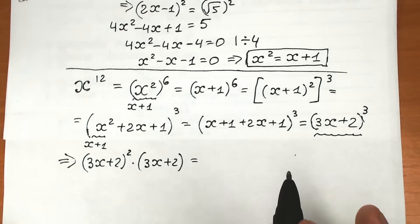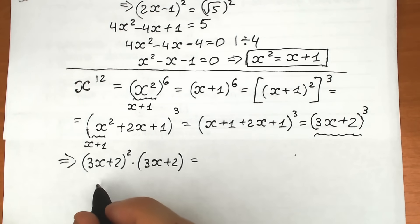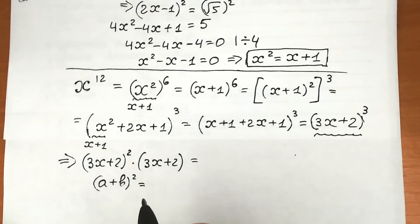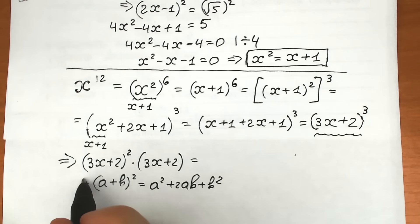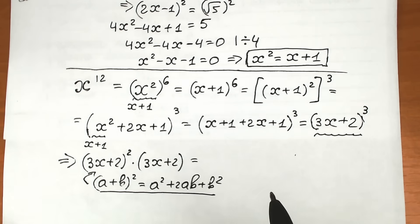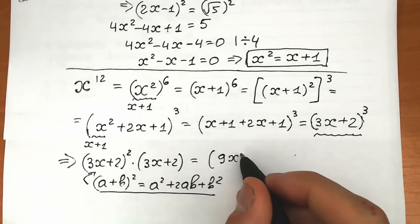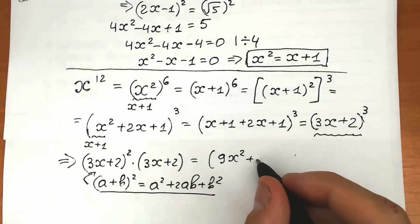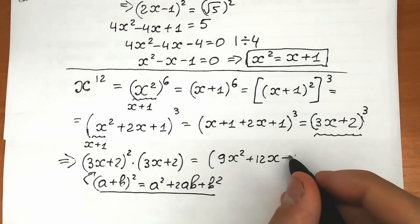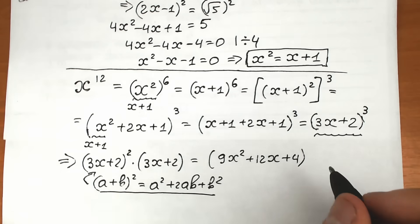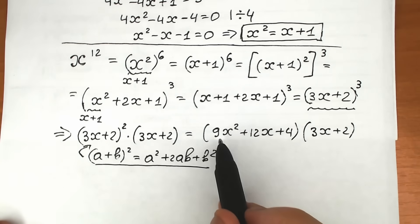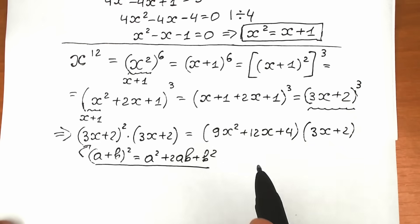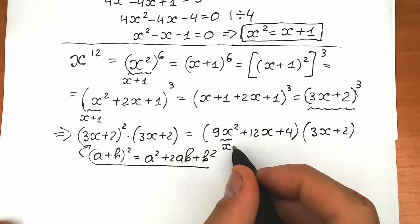Applying the formula: (3x)² + 2·(3x)·2 + 2² = 9x² + 12x + 4. Don't forget to multiply by (3x + 2). And since x² = x + 1, we can substitute for x² once again.